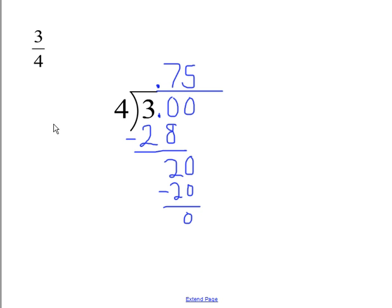Here I have carried out the long division, and this division did terminate to 0.75. Therefore, 3 fourths is equal to 75 one-hundredths.